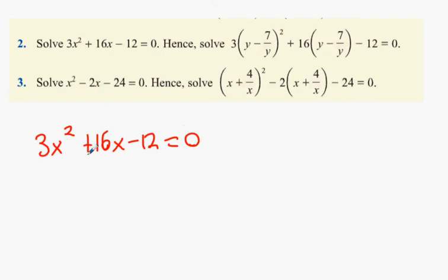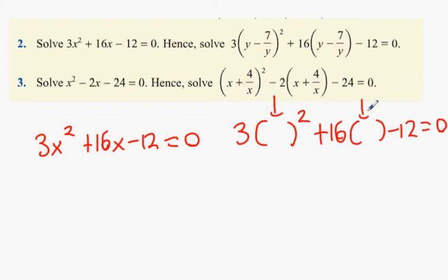So the example for this quadratic equation is 3 times some random number squared, then you add on 16 times this number, then you take away 12 equals 0. When you find the value of this number, when you put that number into that equation, it has to make a balance equal to 0.